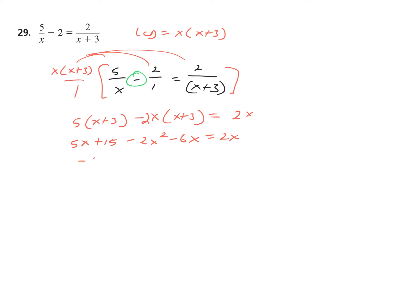Don't do anything until we combine like terms. Minus 2X squared — what's that going to be? Minus X plus 15 equals 2X. Move everything from left to right because we want a positive leading coefficient. Add 2X squared to both sides, add X to both sides — giving 3X — and subtract 15 from both sides.